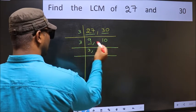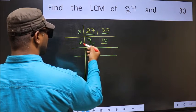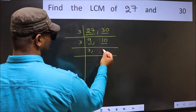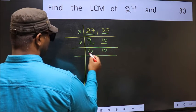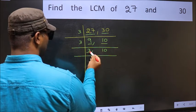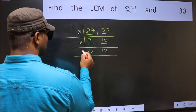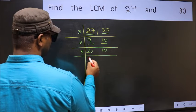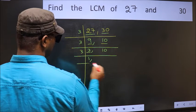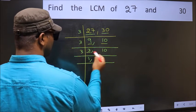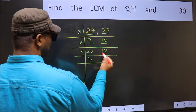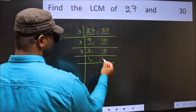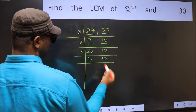The other number, 10, is not divisible by 3, so you write it down as it is. Now here we have 3 — 3 is a prime number, so 3 ones is 3. The other number, 10, is not divisible by 3, so you write it down as it is.